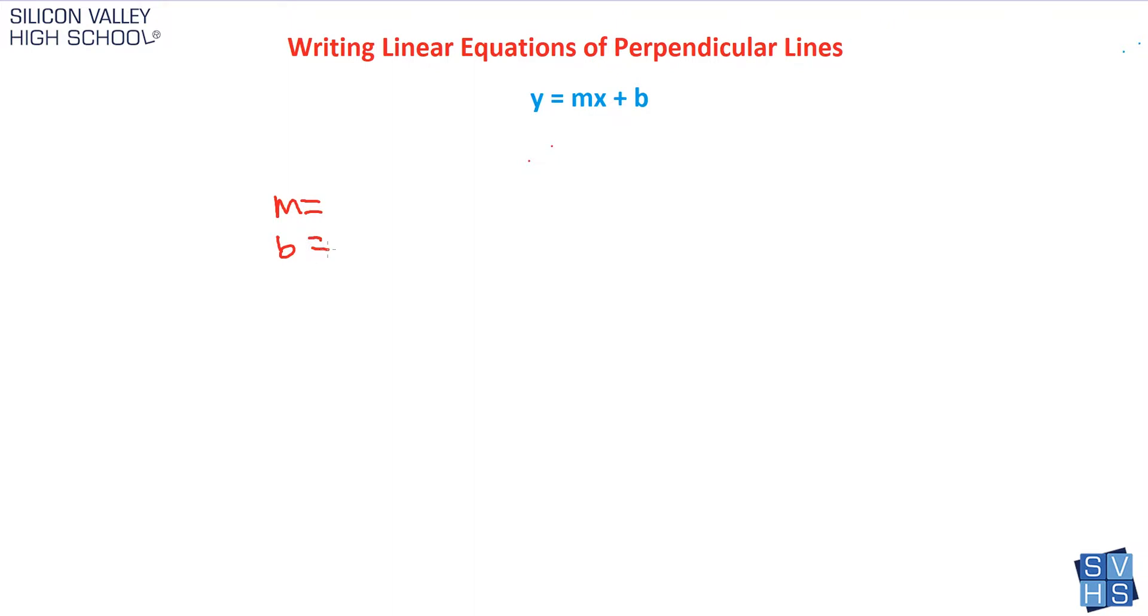You've probably learned this in previous videos, like with parallel lines. Really, we're just trying to find m and b. The one thing about perpendicular lines is if they give me a line perpendicular to my line, that's sort of a clue into what my slope is.